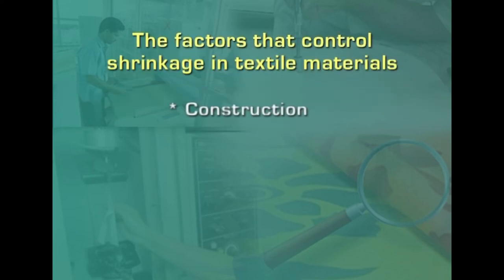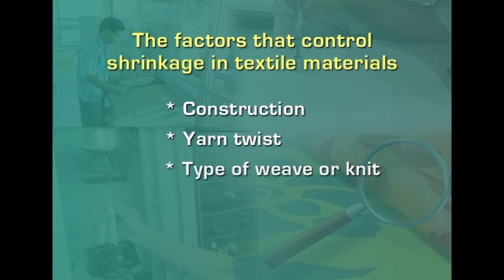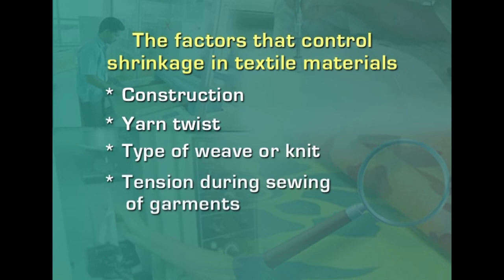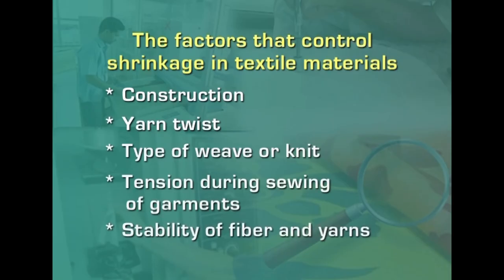Factors controlling shrinkage include: construction of the material — tighter construction reduces shrinkage; yarn twist — optimum twist controls shrinkage; plain weave and jersey knit are more resistant to shrinkage due to more interlacings. Uneven or excessive tension during sewing causes differential shrinkage and puckering in seams. Improper stabilization of fibers or fabric leads to excessive shrinkage, especially in blends where synthetic fibers shrink differently from cellulosic or animal fibers.